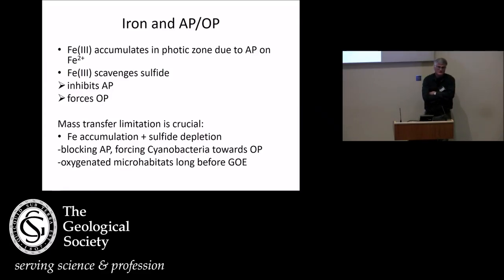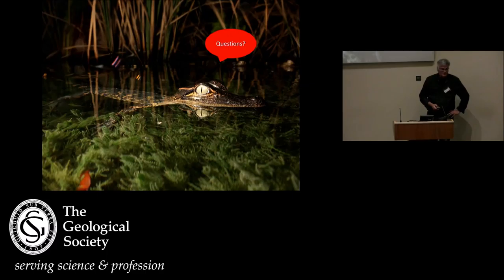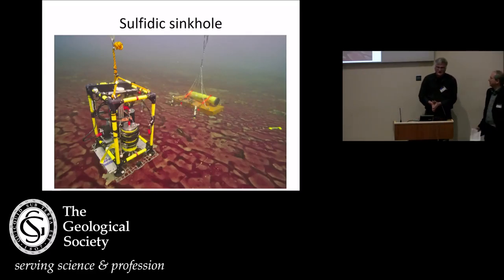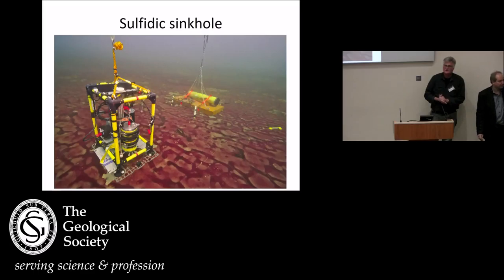It might be cool to also check this in the fossil records, maybe, if in the photic zone or if in microbial mats, iron precipitates are dominant. But, okay, if you have any questions, let me know.